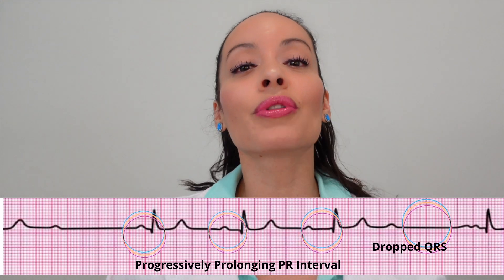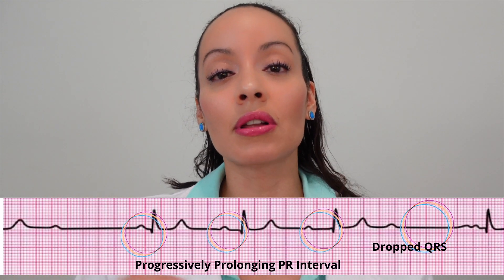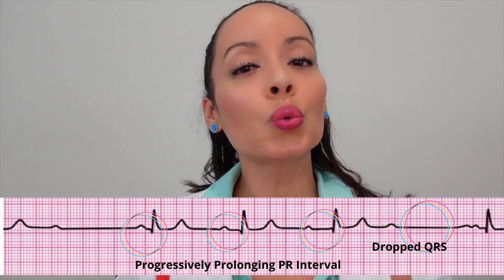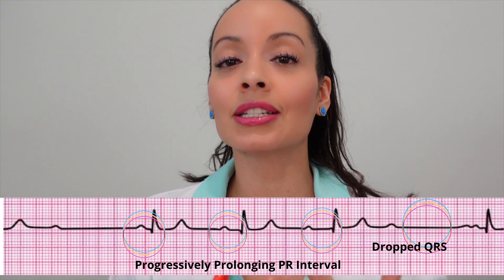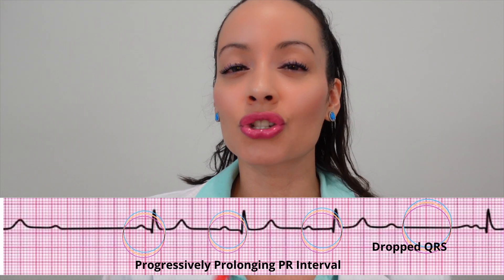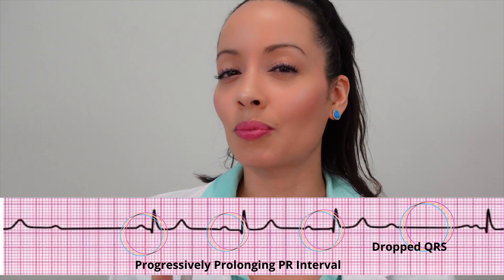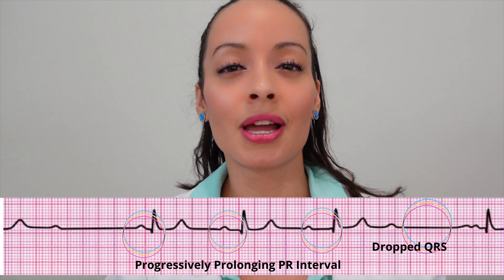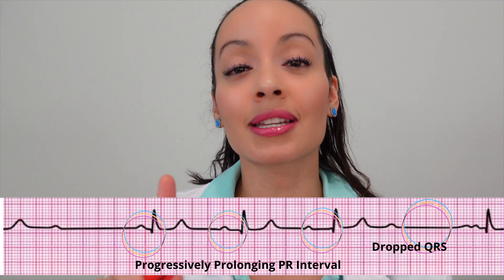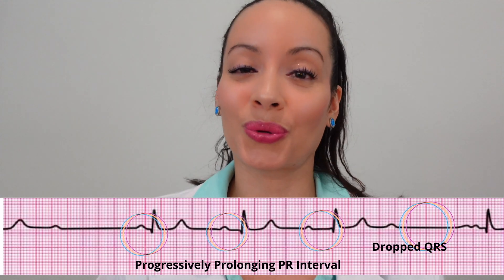So you know the saying: longer, longer, longer, drop — then you have a Wenckebach. Wenckebach is second degree AV block, but you think: there's type 1 and type 2, is it type 1 or type 2? The way to remember it is that Wenckebach is type 1 because you wink with one eye.